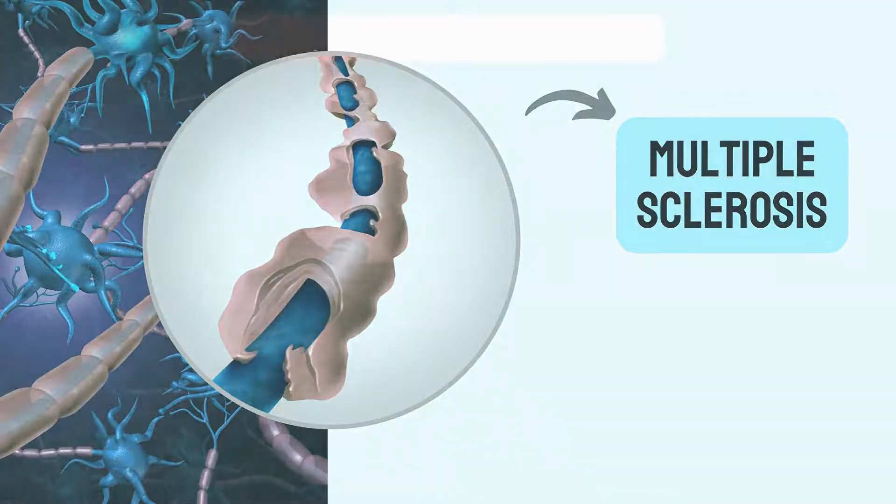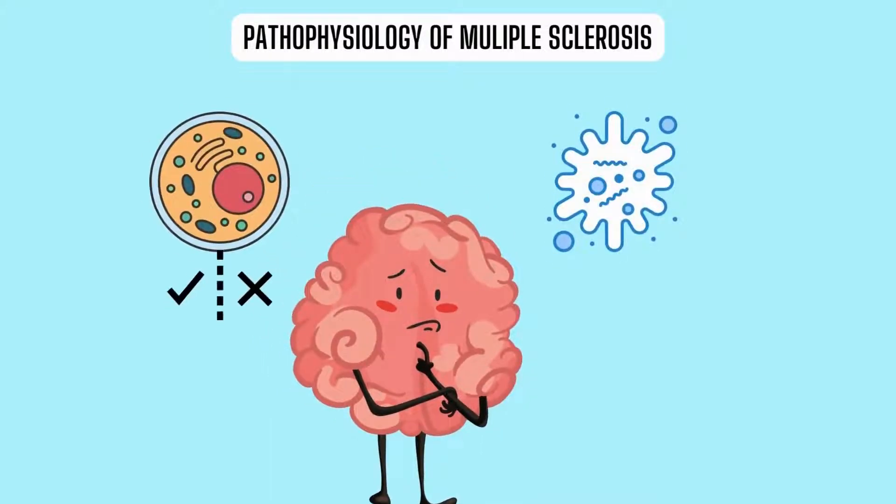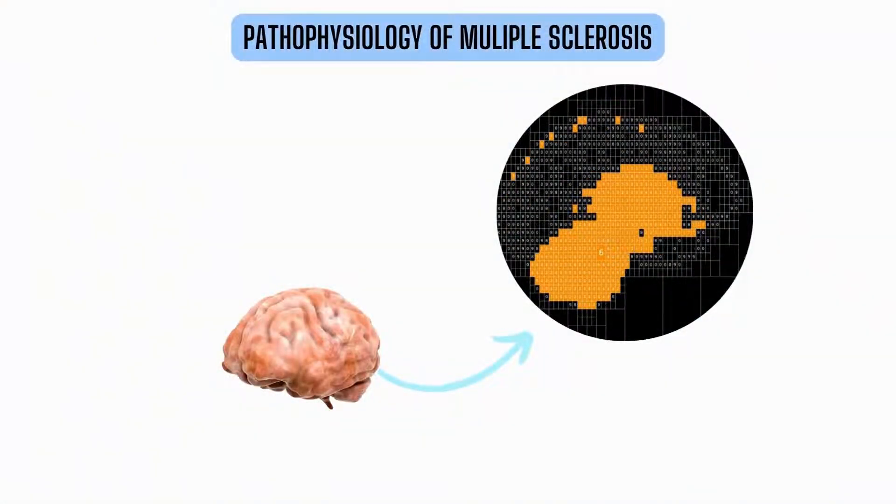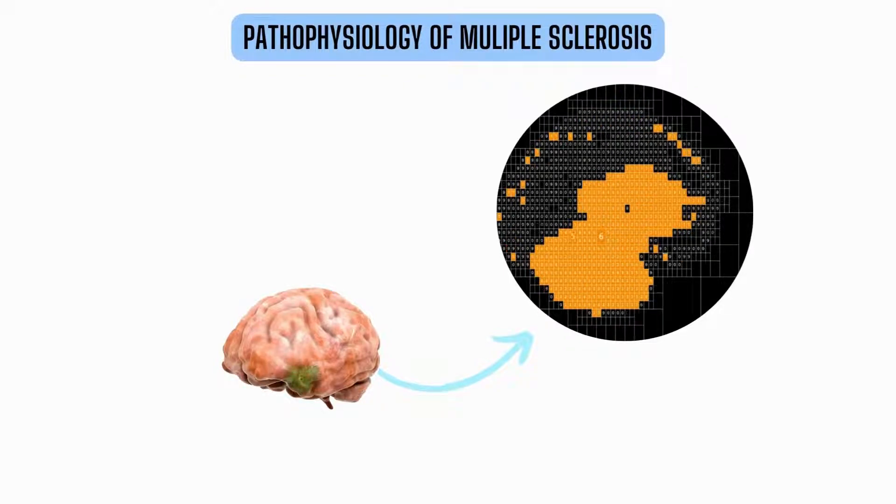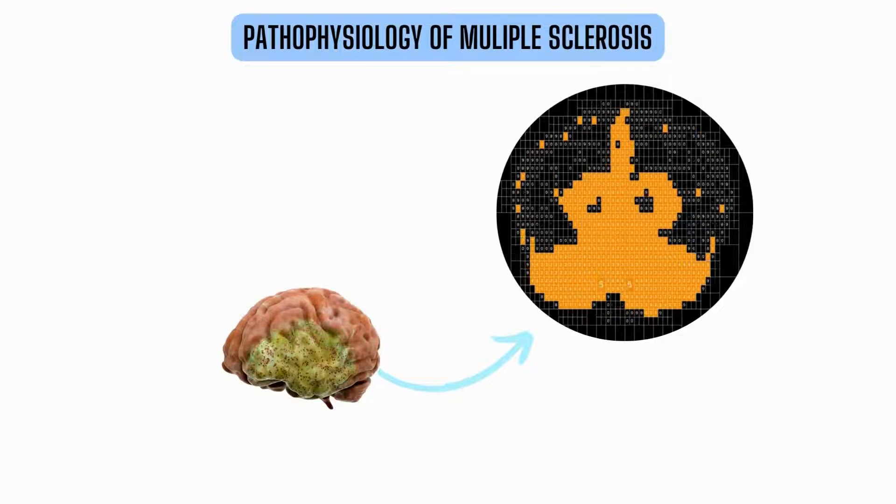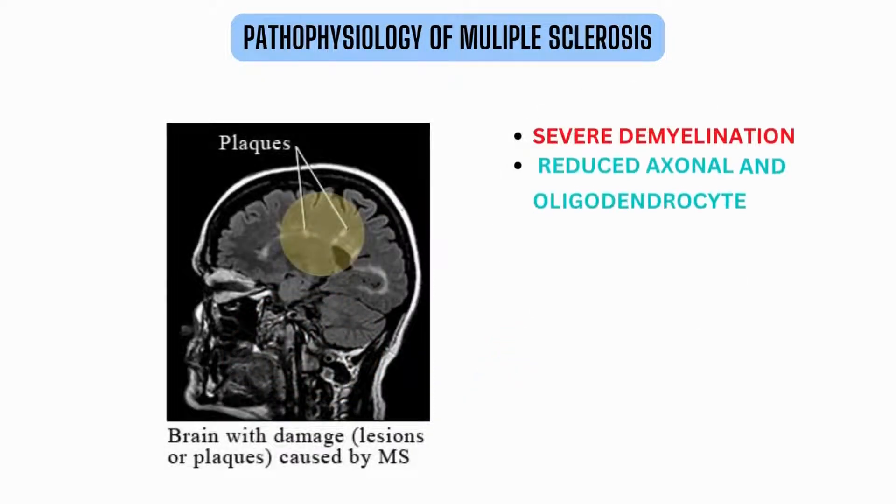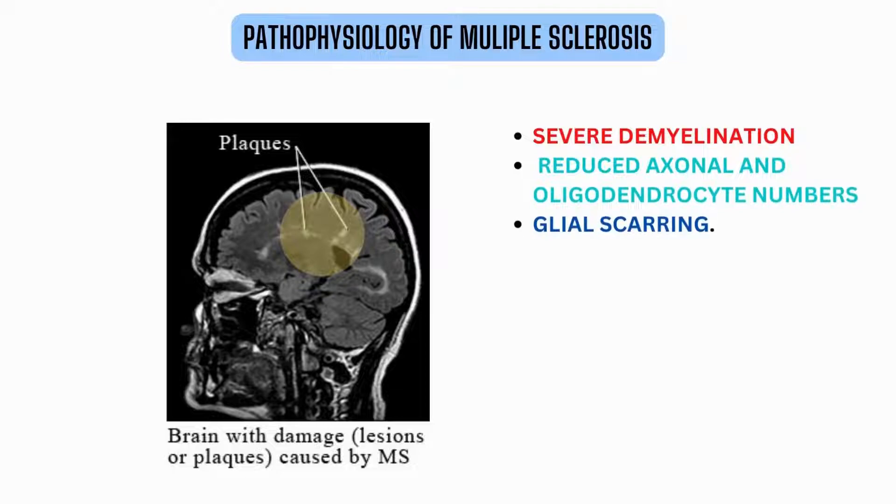MS is an autoimmune disease where the body is unable to distinguish between healthy cells and antigens. MS begins with recurrent bouts of CNS inflammation which causes damage to both the myelin sheath covering axons and the axons themselves. When we cut the brain of patients with MS, there are areas of severe demyelination, reduced axonal and oligodendrocyte numbers, and glial scarring.